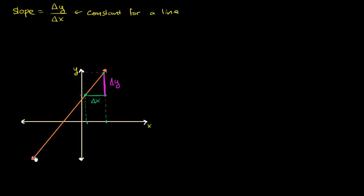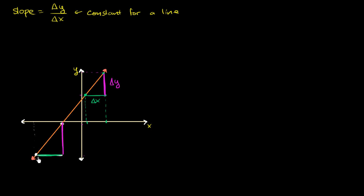Now let's look at two other points. Let's say I have this point and this point right over here, and let's do the same exercise. What's the change in x? This point's x value is here, this point's x value is here. So if we start here and go this far, this would be the change in x between this point and this point. And our change in y — this y value is here, this y value is up here — so our change in y is going to be that right over here. I'm just picking two arbitrary points.